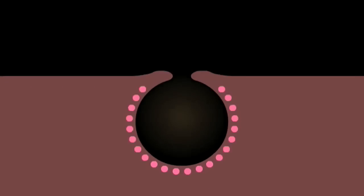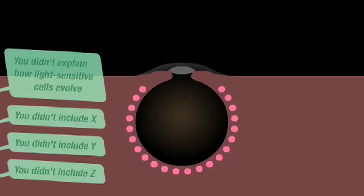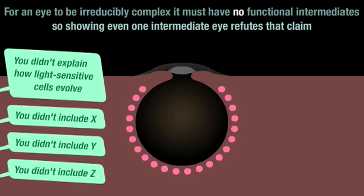In the second minute of my video, I presented a sequence debunking the common claim that the eye is such a system by showing its vision evolving by degrees. A few dismissed the sequence for not explaining more stages, but for an eye to be irreducibly complex it must have no functional intermediates. So showing even one intermediate refutes that claim, and my video features several.